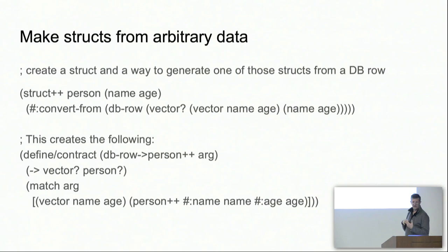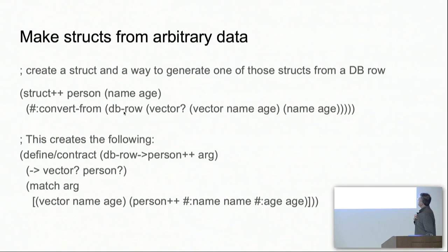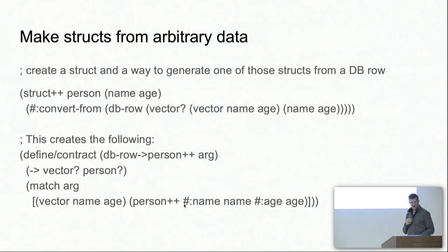Maybe you want to go the other way and take arbitrary data and turn it into one of these structs. Here is a convert-from function. What's happening here is we have a function, db-row->person, that will be automatically generated. It takes a vector, runs it into a match, and says it's got to be a vector with name and age. The values used for the keyword constructor are name and age, and you can see the function being generated.